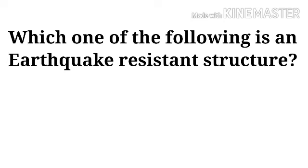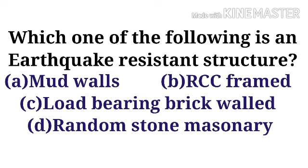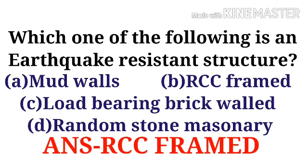Which one of the following is an earthquake resistant structure? Option A: mud walls, option B: RCC framed, option C: locked bearing brick walled, option D: random stone masonry. The correct option is option B, RCC framed.